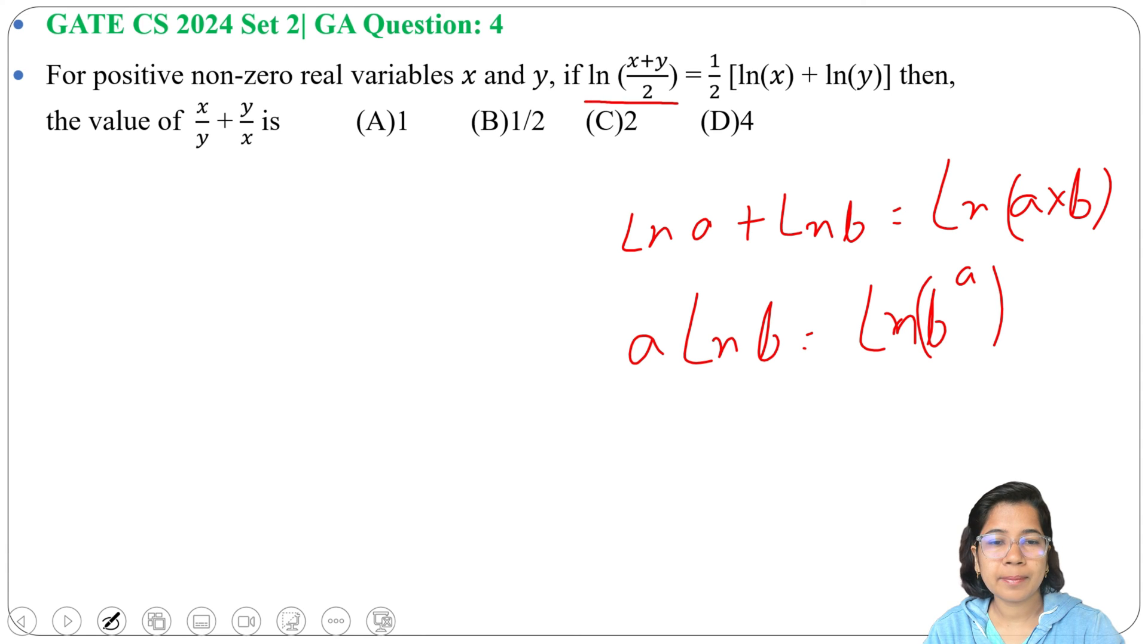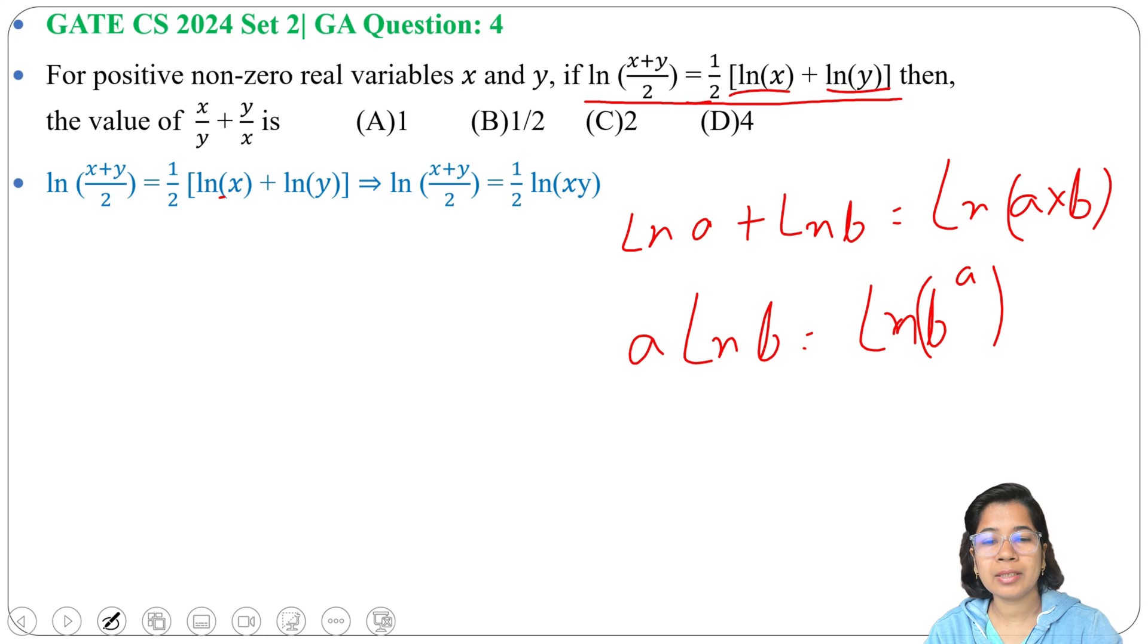We have ln((x+y)/2) = (1/2)[ln(x) + ln(y)]. So this ln(x) + ln(y) can be written as ln(xy).